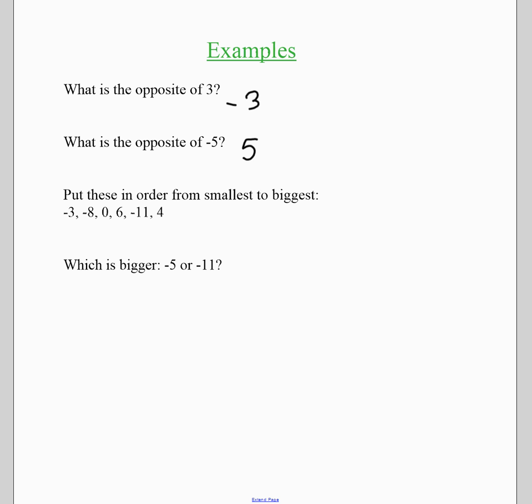So let's put these in order from the smallest to the biggest. So again, smallest is the furthest away from zero. So in this case, negative 11, that is the smallest. Negative eight is the second smallest. Then negative three, then zero, then four, then six.